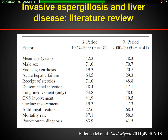Another important risk factor is liver disease. This is a literature review by Marco Falcone published in Medical Mycology, comparing two periods: 1973–99 and 2000–2019. The number of reported cases increased over time. Very interesting is the difference in mortality — in the first period it was around 90%, reduced in the second period. Patients with end-stage cirrhosis are at very high risk to develop invasive aspergillosis.